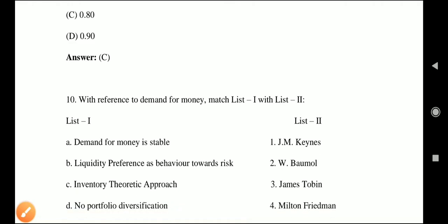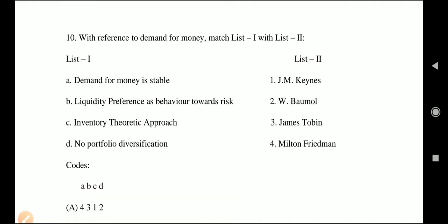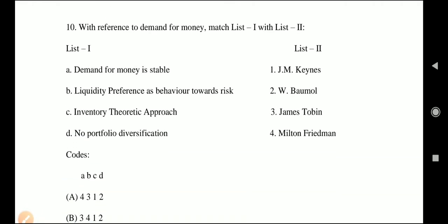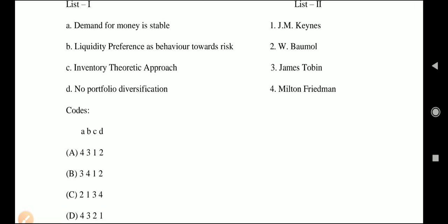Question 10, the last question: match list 1 with list 2 with reference to demand for money. List 1 has: (1) demand for money is stable; (2) liquidity preference as behavior toward risk; (3) inventory theoretic approach; (4) no portfolio diversification. List 2 has the corresponding economists. Let's see the explanation.